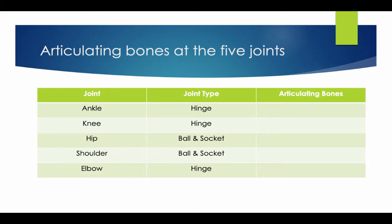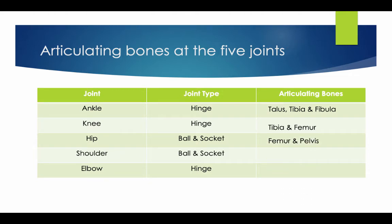The articulating bones at the five different joints are as follows. At the ankle joint, the joint type is a hinge, and the articulating bones are the talus, the tibia, and the fibula. At the knee, it is a hinge joint, and the articulating bones are the tibia and the femur. At the hip, it is a ball and socket, and the articulating bones are the femur and the pelvis. At the shoulder, it is again a ball and socket, and the articulating bones are the humerus and the scapula. At the elbow, it is a hinge joint, and the articulating bones are the humerus, the radius, and the ulna.